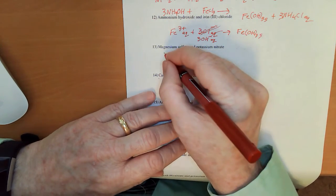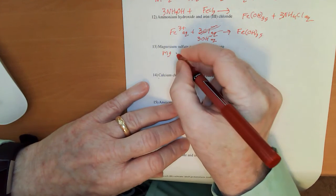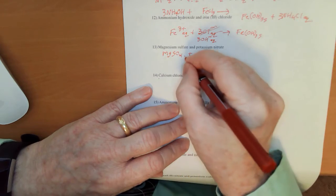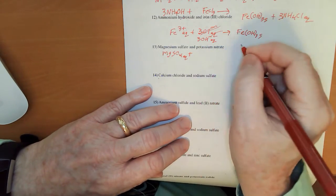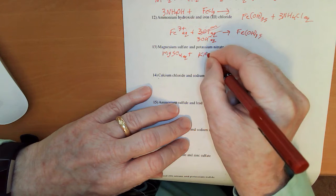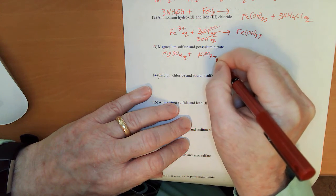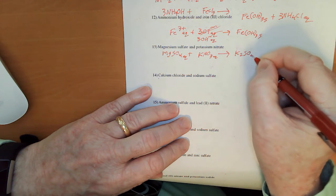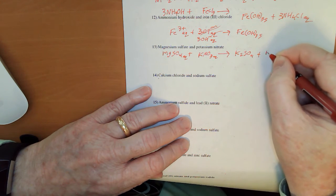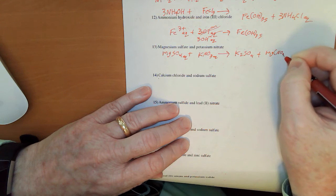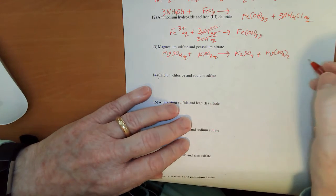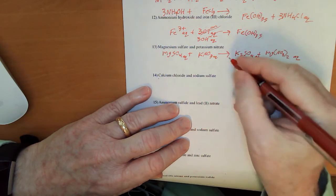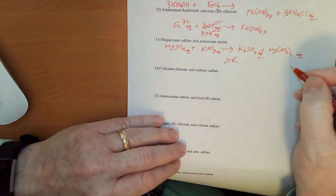Magnesium sulfate. MgSO4. All of these are aqueous to begin with. Plus potassium nitrate. KNO3. That would give us K2SO4 and Mg NO3 sub 2. You know what? Nitrate, aqueous. Potassium there, aqueous. That's a no reaction.